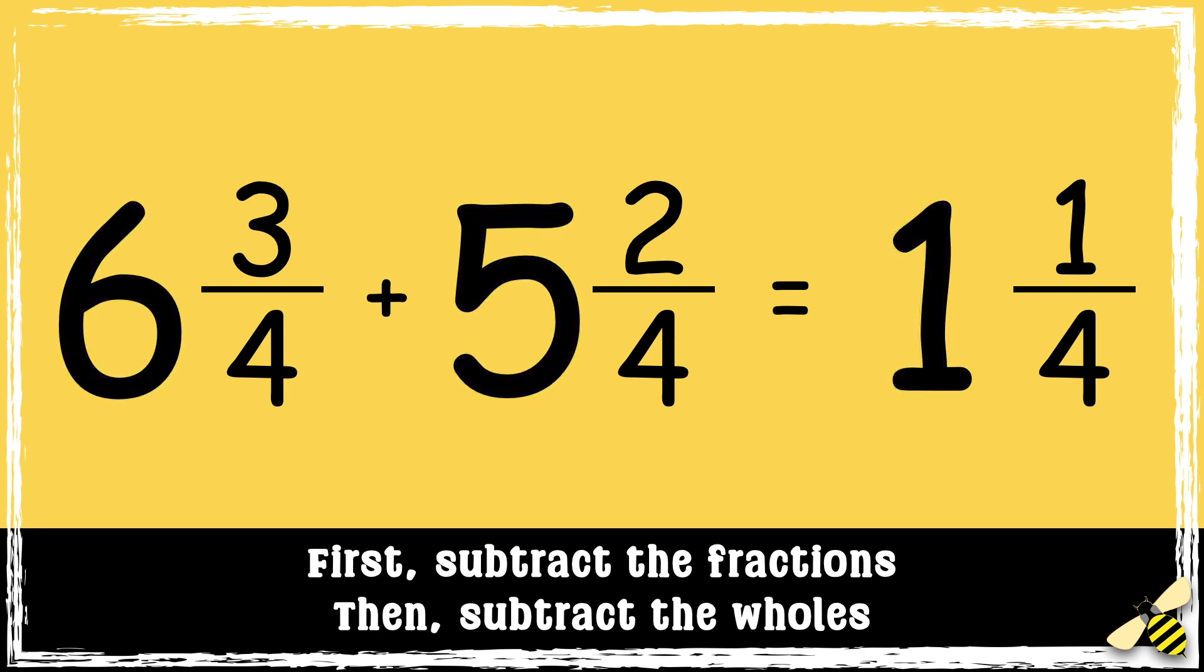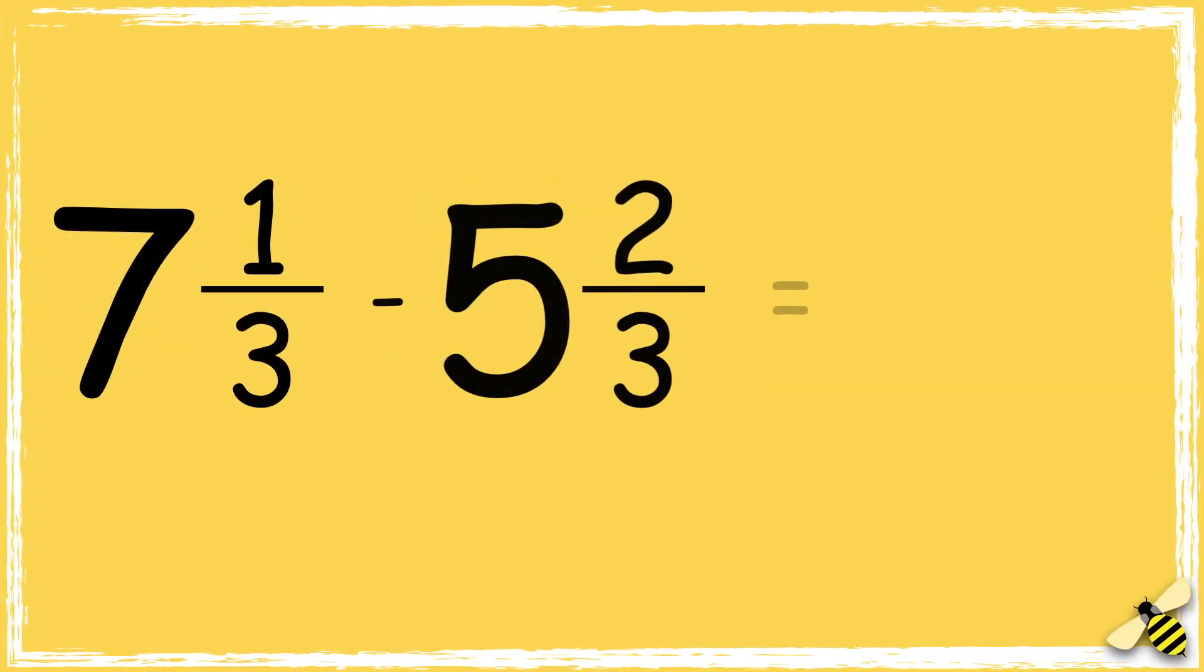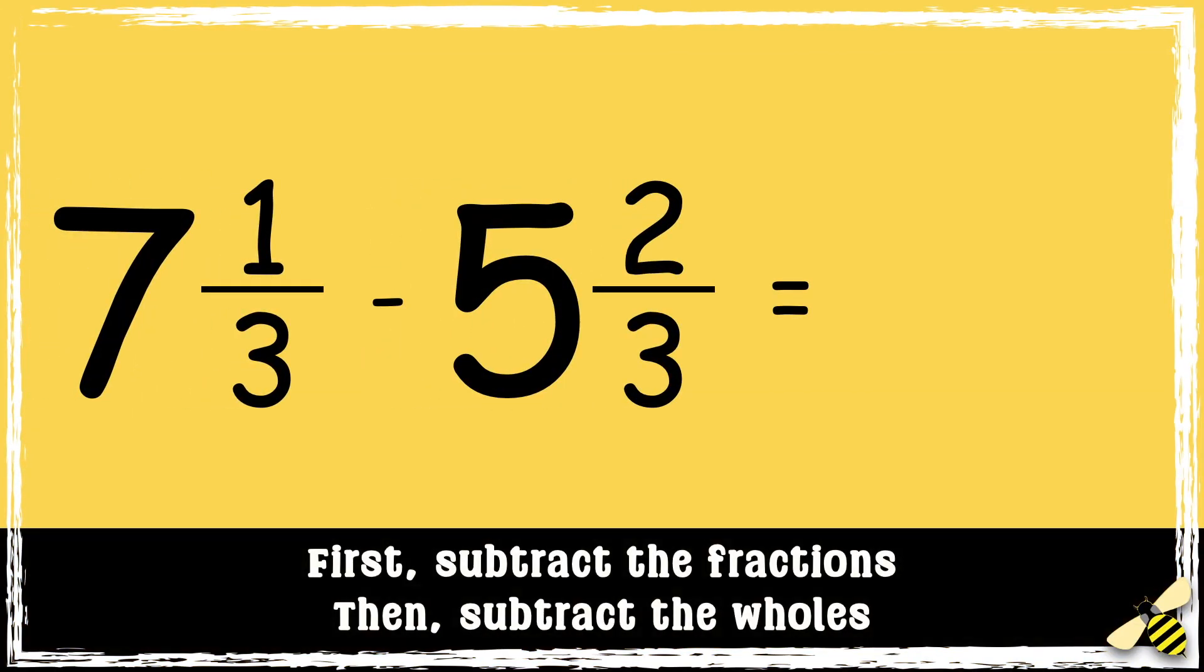Let's have a look at one more: seven and one-third take away five and two-thirds. So first we subtract the fractions. We can't take two-thirds away from one-third, so we need to find a different way to work this out.